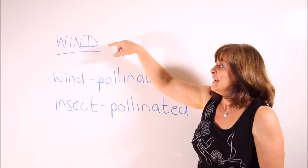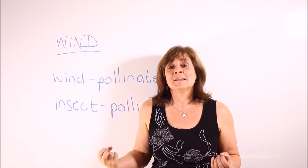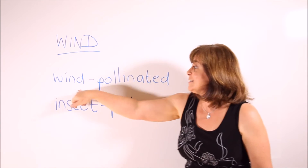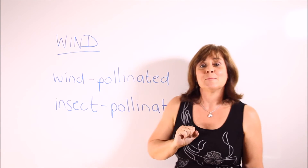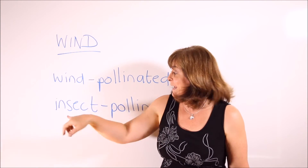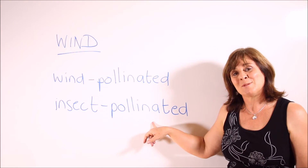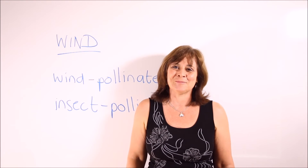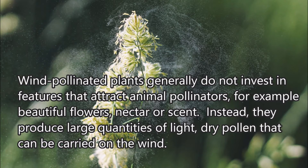Not just insects pollinate plants — the wind can also pollinate plants. A plant that is pollinated as a result of the action of the wind is wind-pollinated, and a plant that is pollinated by insects is an insect-pollinated plant. Sample sentence: Wind-pollinated plants generally do not invest in features that attract animal pollinators, such as beautiful flowers, nectar, or scent. Instead, they produce large quantities of light, dry pollen that can be carried on the wind.